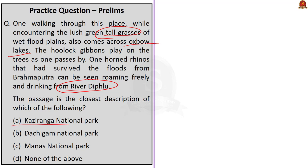The correct answer is option A, Kaziranga National Park. Kaziranga is near the flat plains of the Brahmaputra, has River Diphu, hosts Hoolock gibbons, and has a lot of oxbow lakes. Dachigam National Park is located in Jammu and Kashmir — there is no Brahmaputra there, so option B is wrong. Manas National Park does not have River Diphu, so we can eliminate option C. The correct answer is option A, Kaziranga National Park.